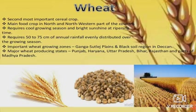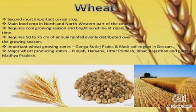Wheat is the second most important cereal crop and the main food crop in north and northwestern parts of the country. It requires a cool growing season and bright sunshine at ripening time, with 50 to 75 centimeters of annual rainfall evenly distributed over the growing season. Important wheat growing zones are the Ganga-Satluj plain and black soil region in the Deccan. Major wheat producing states are Punjab, Haryana, Uttar Pradesh, Bihar, Rajasthan and parts of Madhya Pradesh.